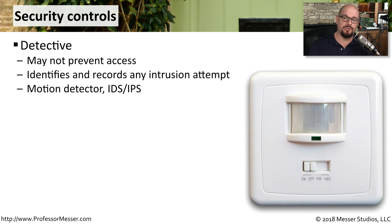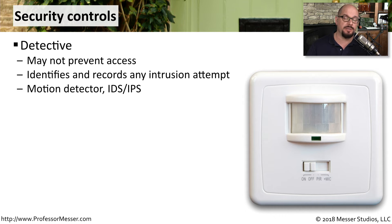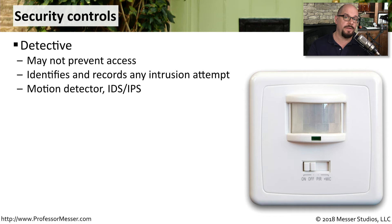A detective security control is going to tell you when a particular event occurs. This may not keep someone away from a system, but it may provide you with a log or a way to track when anyone happens to come near any of your systems. In the physical world, a motion detector is a very good detective security control. And on our systems, we commonly use an intrusion detection system or an intrusion prevention system.